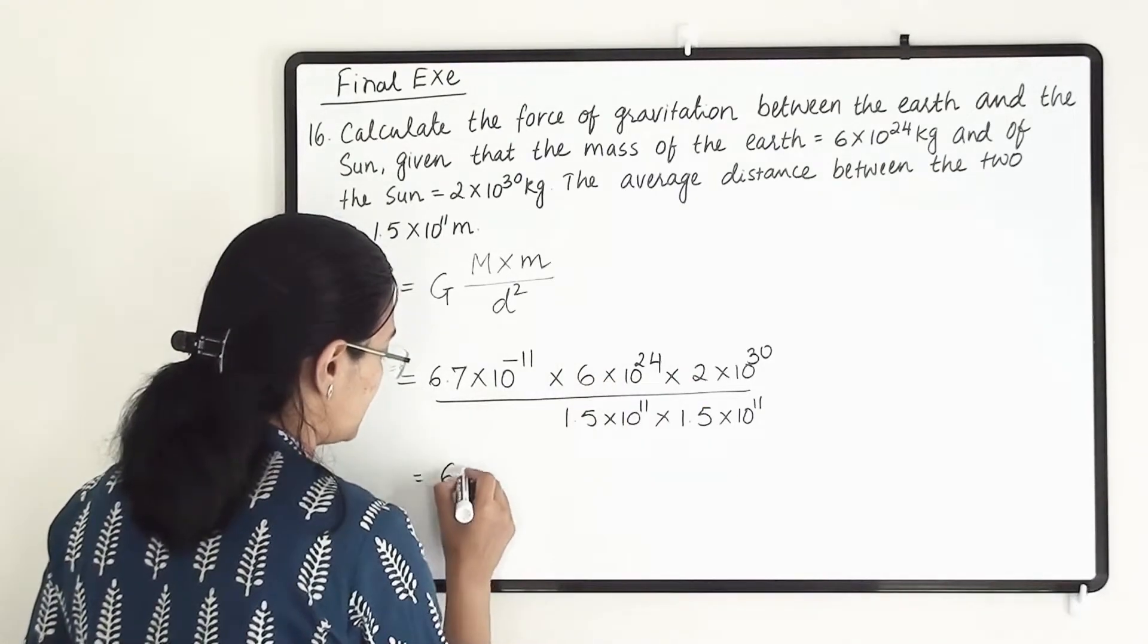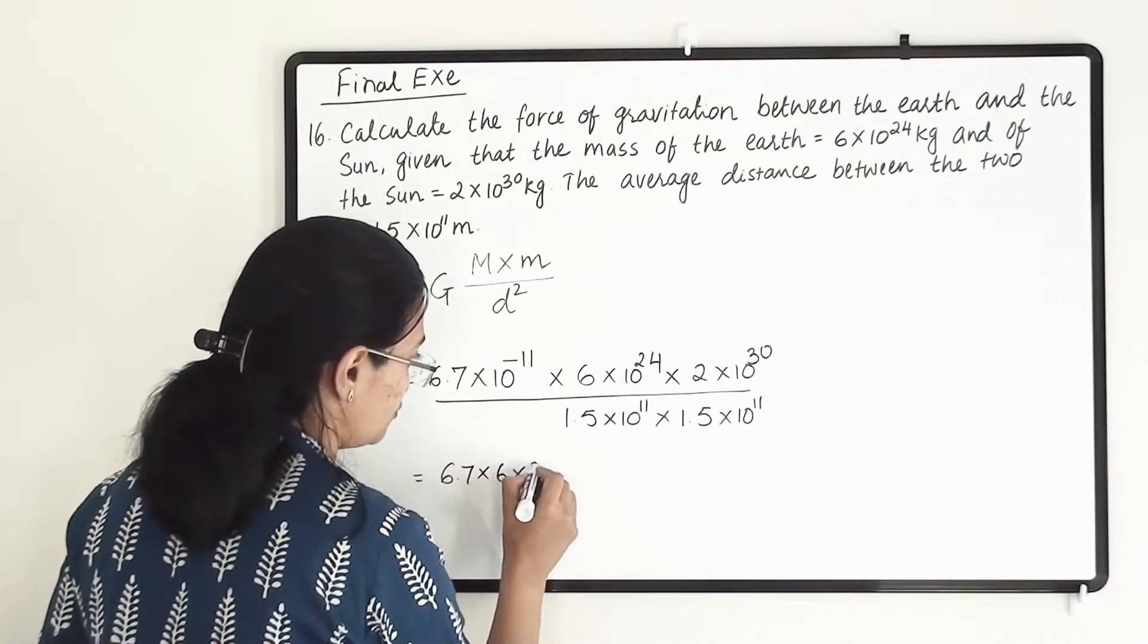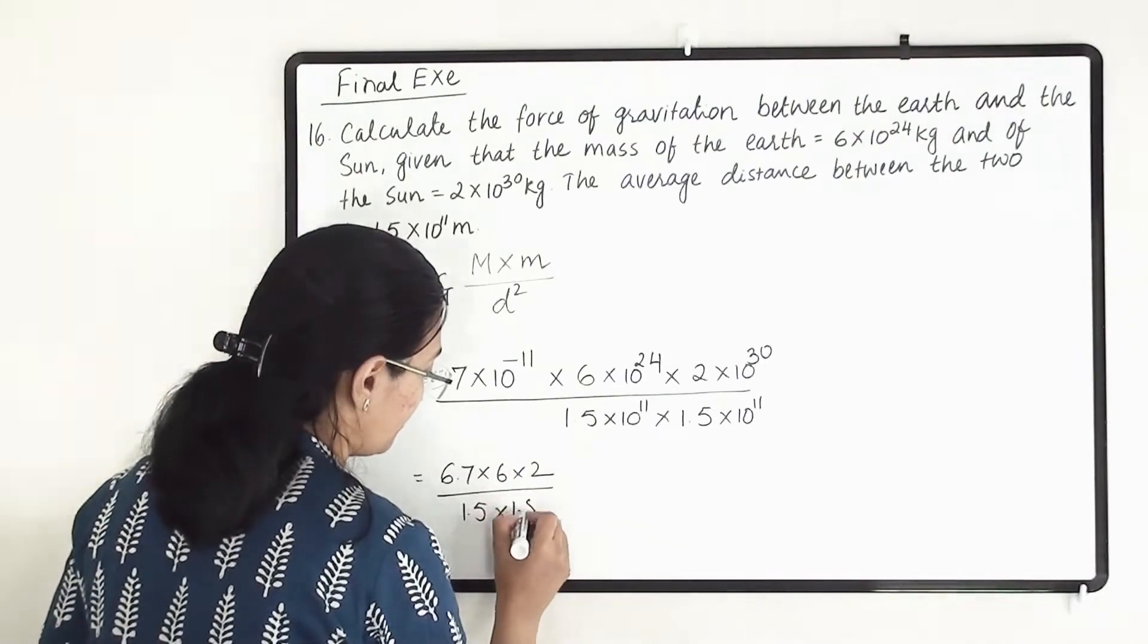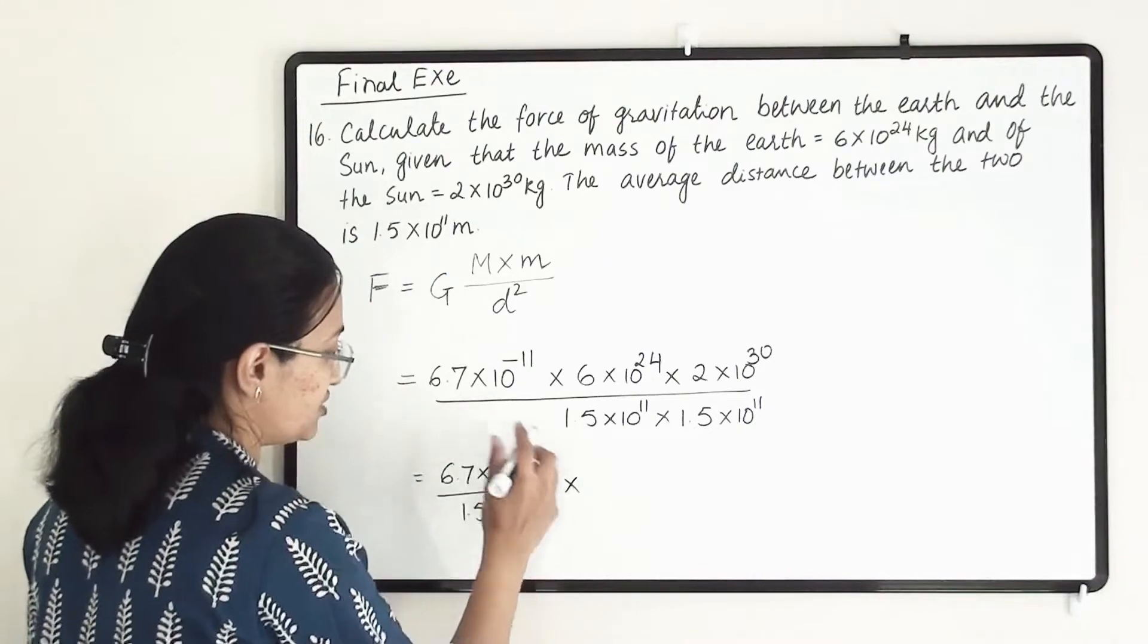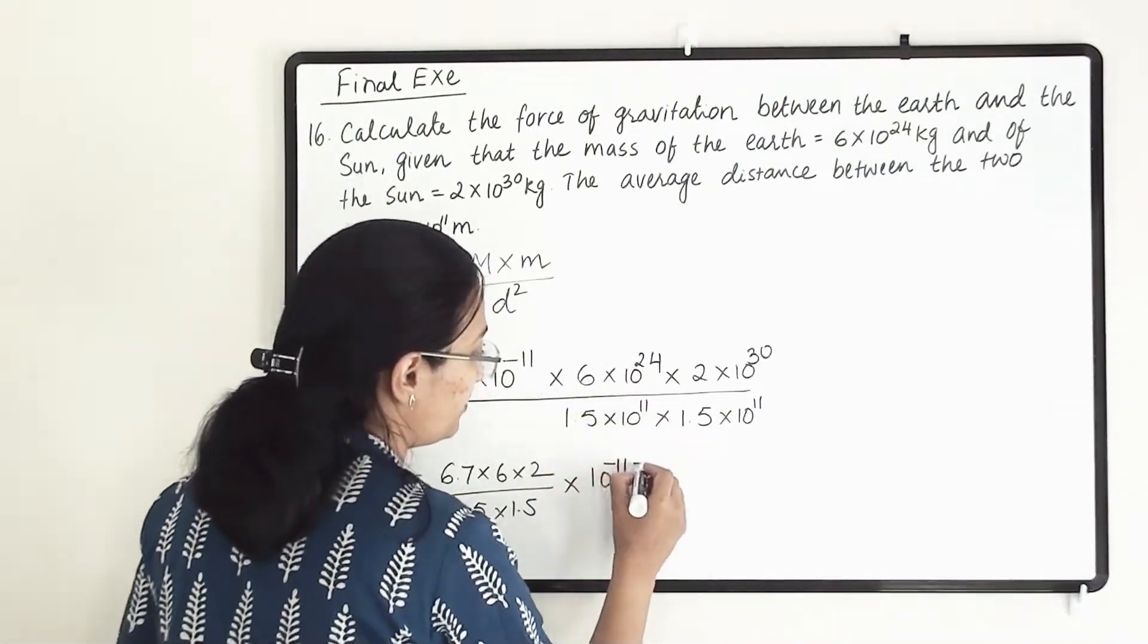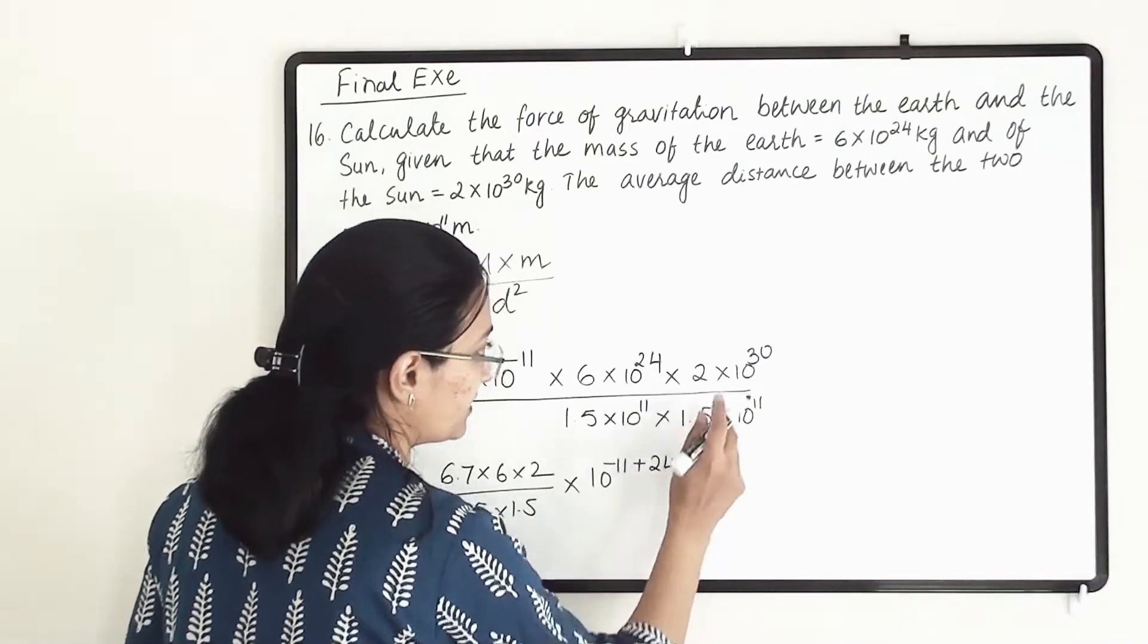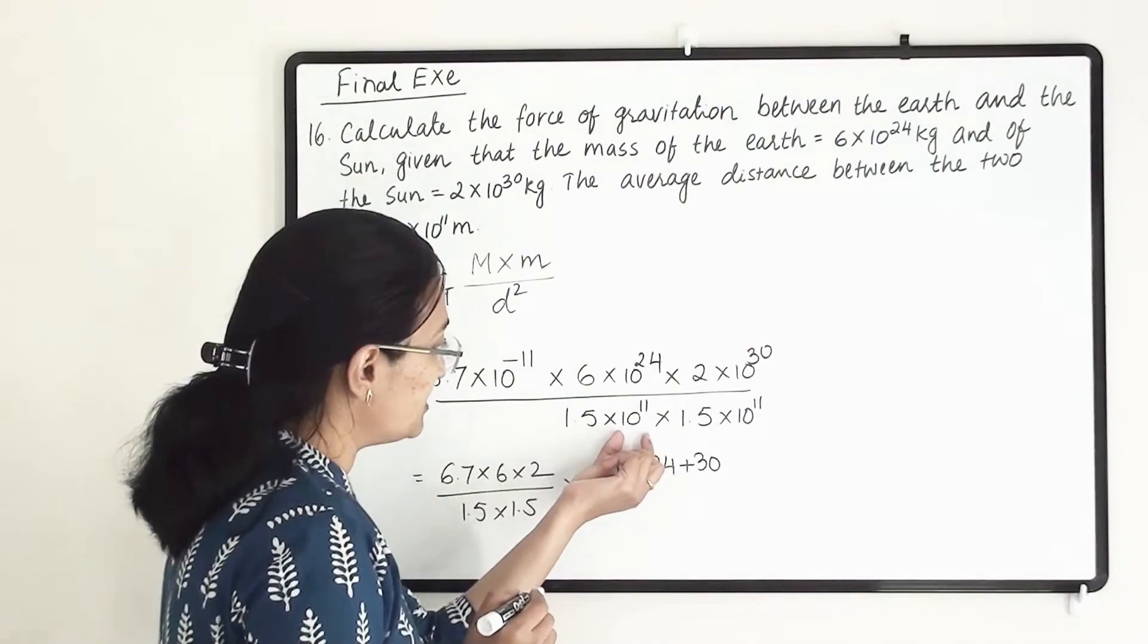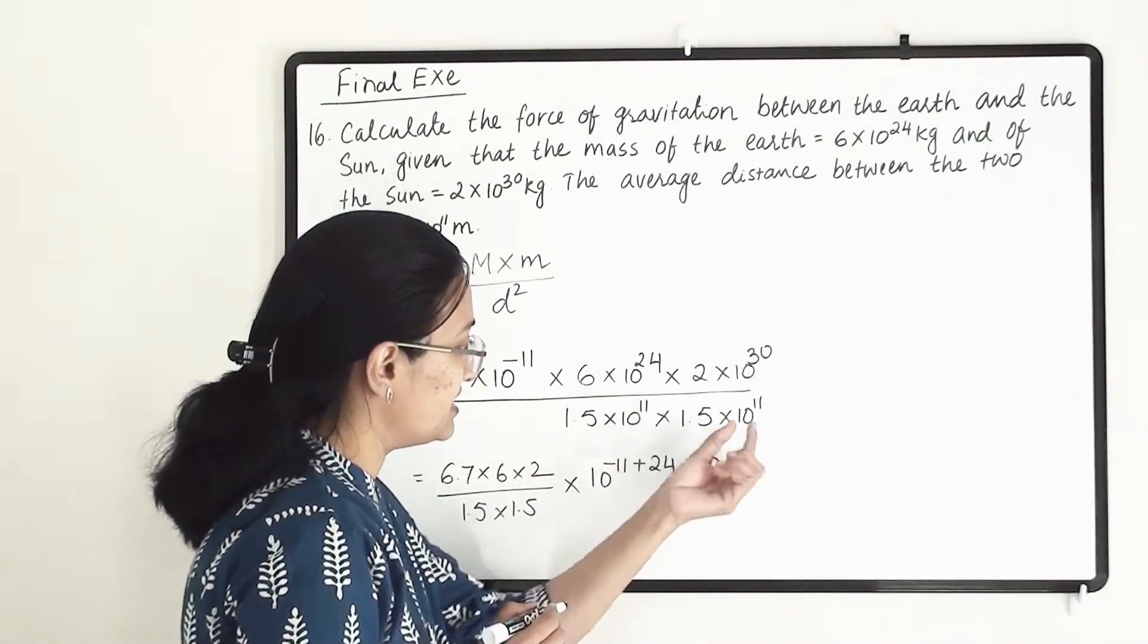That is 6.7×6×2 divided by 1.5×1.5 in multiplication with 10 raised to -11+24+30. Now in the denominator, 10 raised to 11 is there twice.